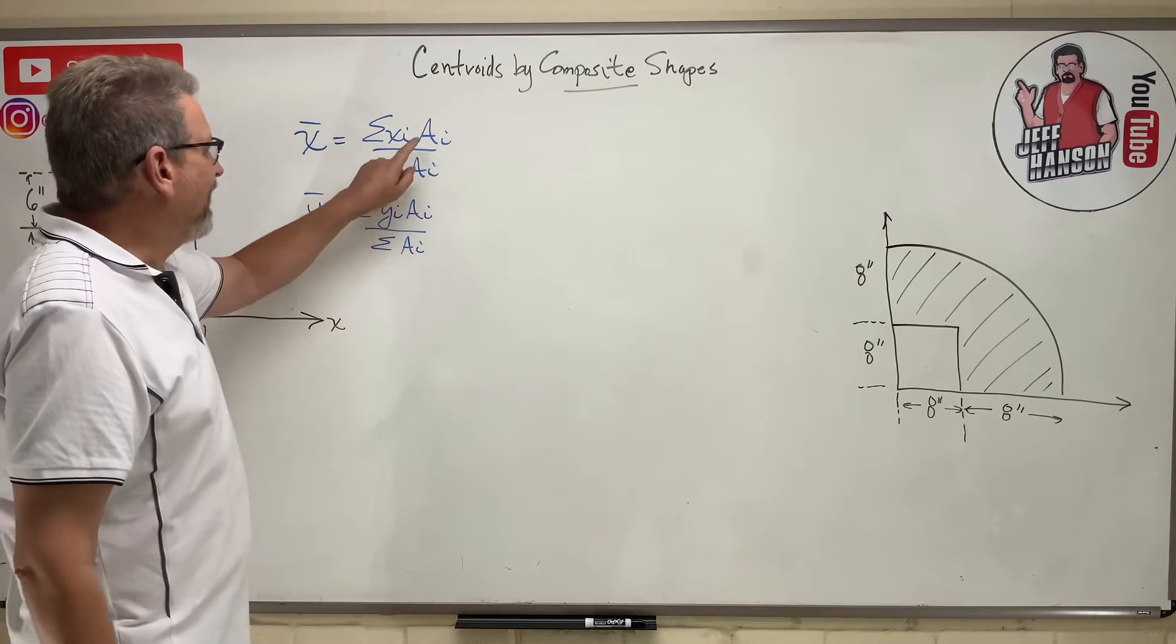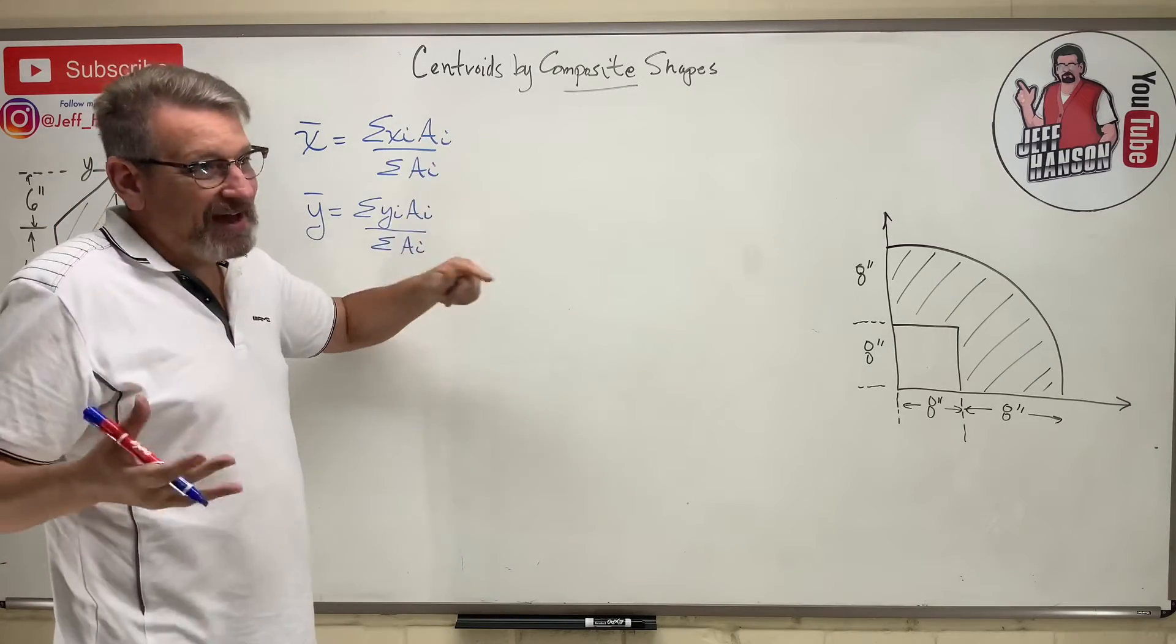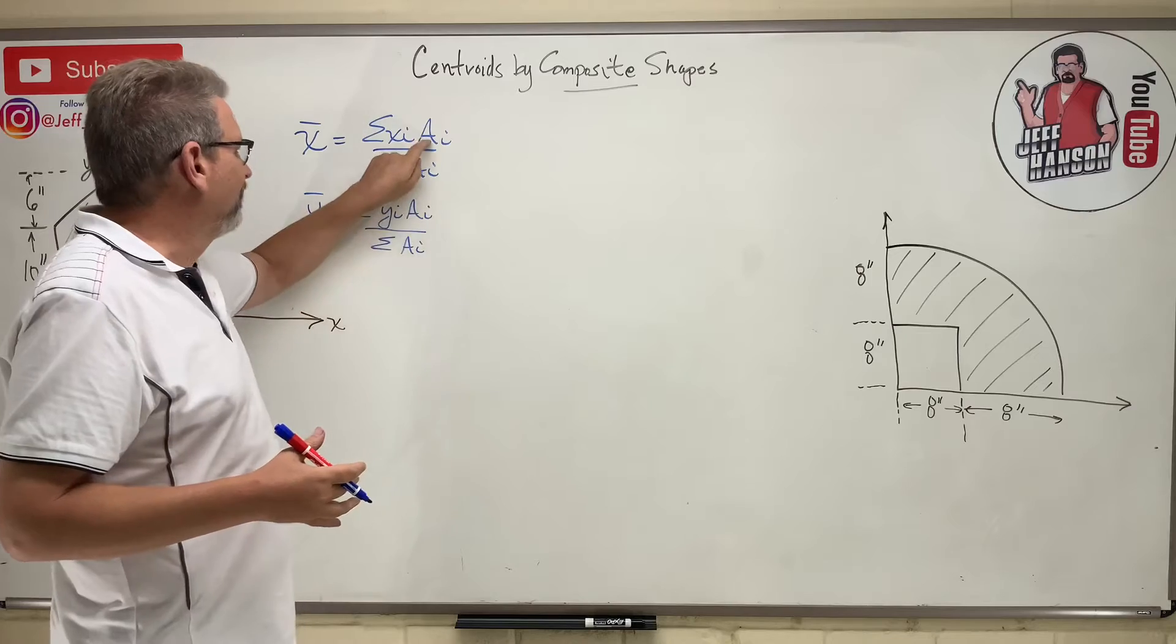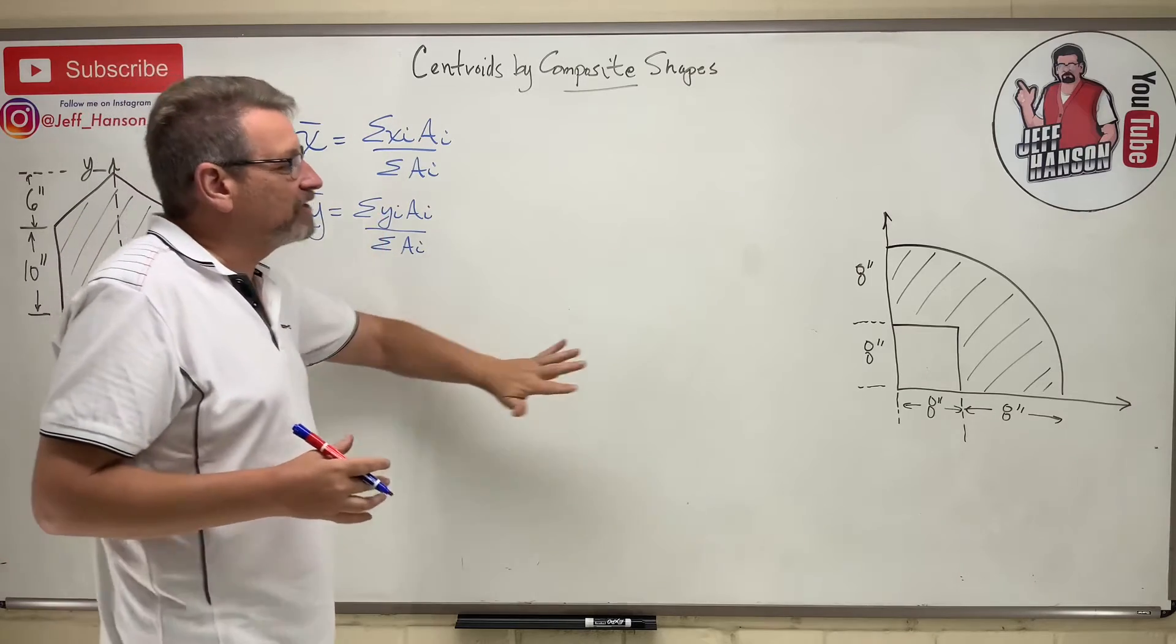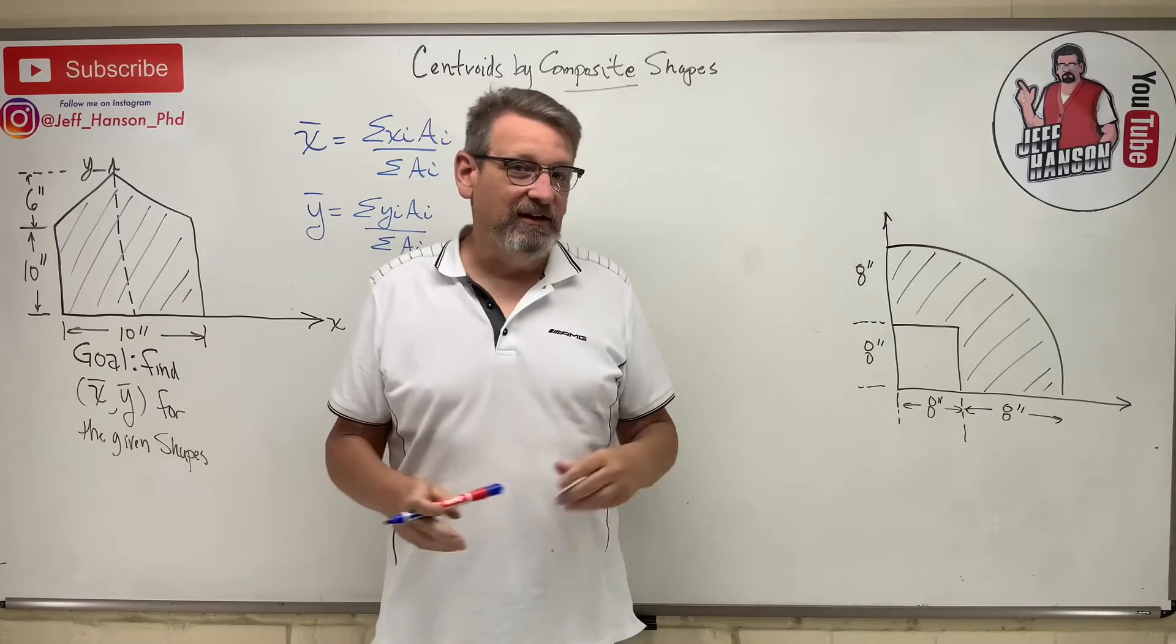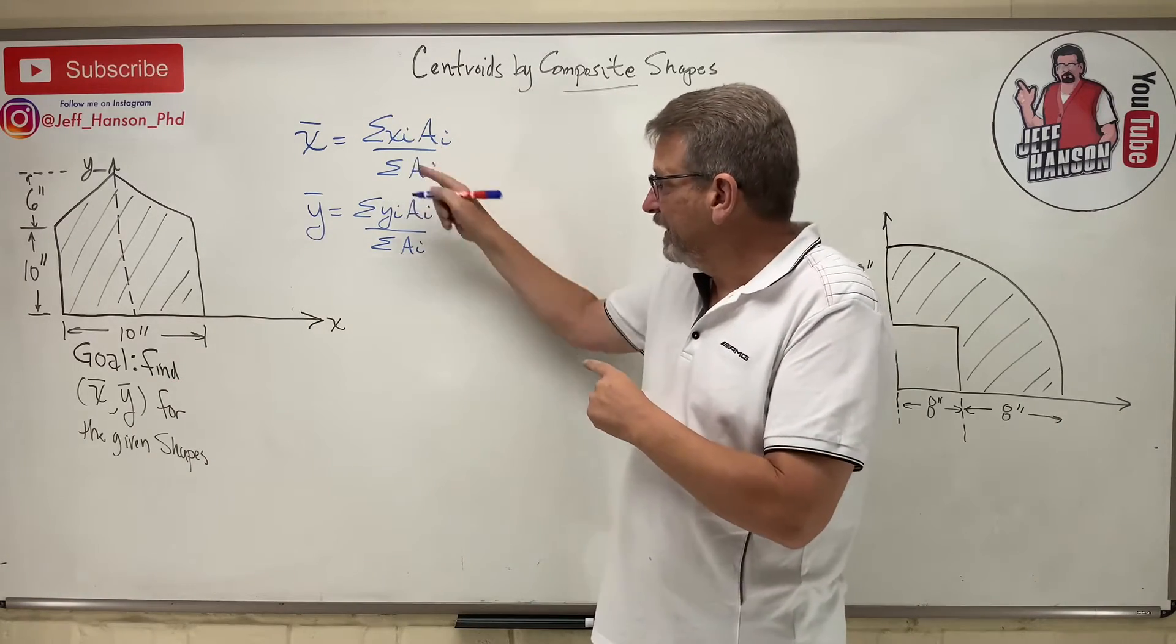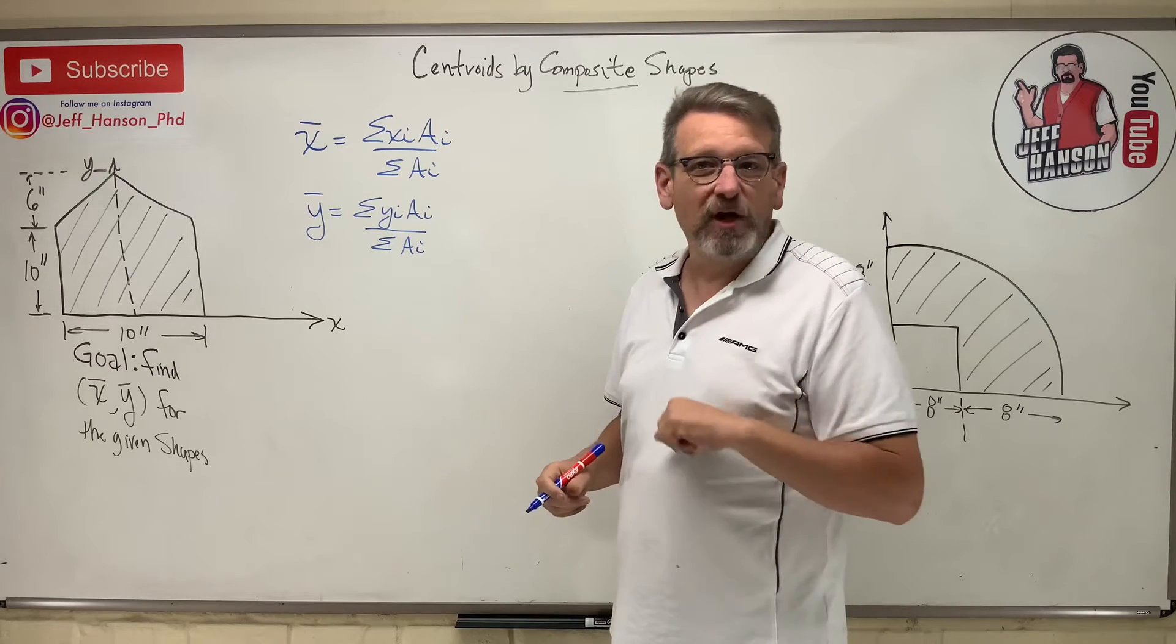Also y-bar is the sum of y sub i times a sub i divided by the sum of a sub i. And of course, this a here can be substituted with volume, weight, mass, length, pressure, all kinds of things. But in this particular case, we're working 2D area problems and let's see if we can use this and I'll show you what these little sub i's mean and what all that means when we solve this problem.